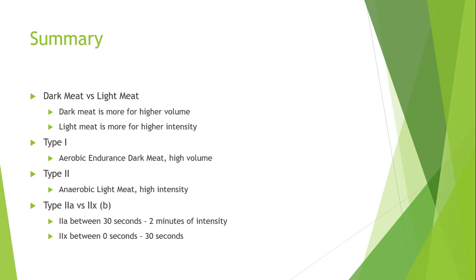Type 1 is aerobic muscle fiber, whereas Type 2 is anaerobic. There is a difference between Type 2A and Type 2X: Type 2X is used between 0 and 30 seconds of maximal intensity; Type 2A is used between 30 seconds and 2 minutes of high intensity. After about 2 minutes of high intensity, Type 1 muscle fiber starts taking over as the primary muscle fiber being used for energy.